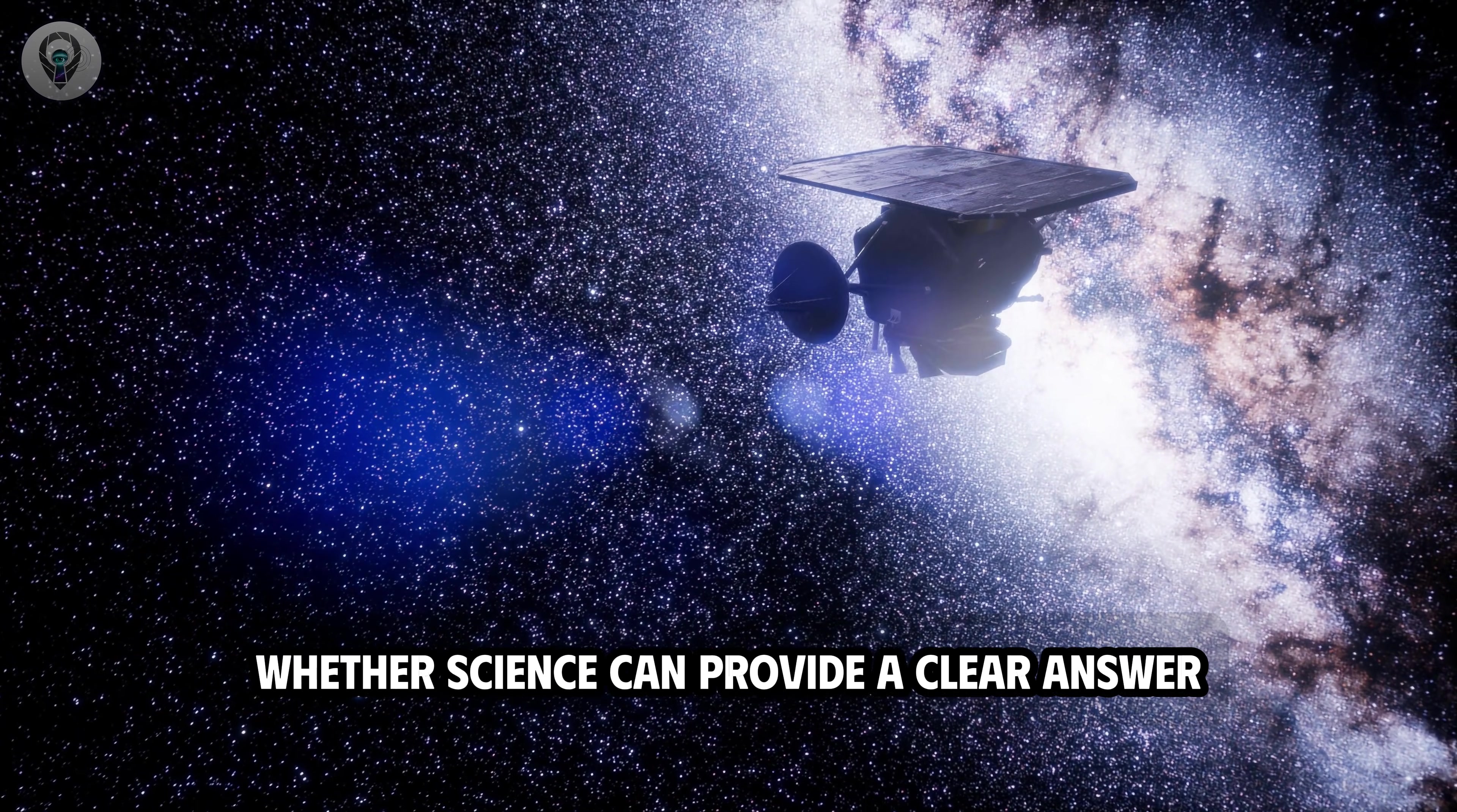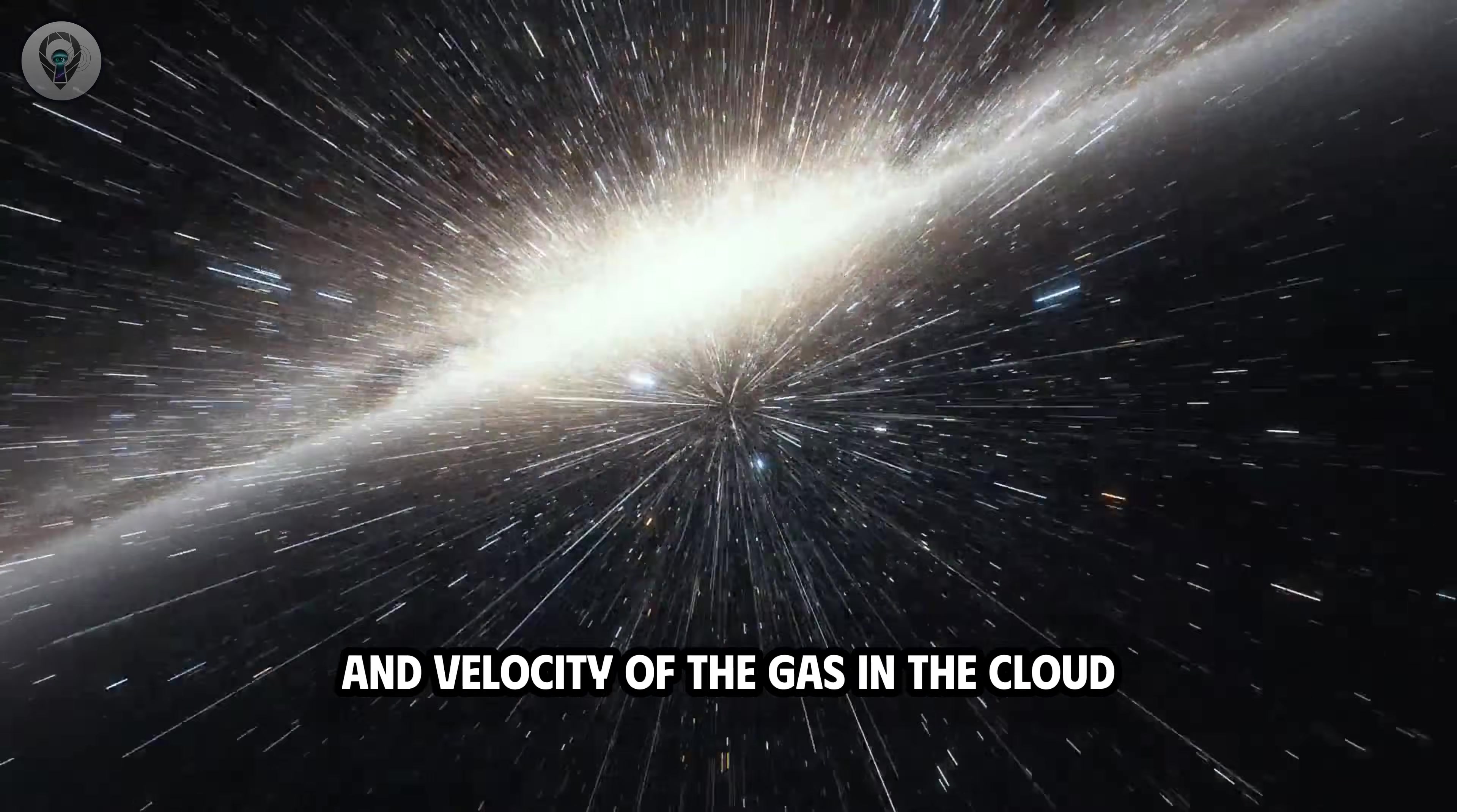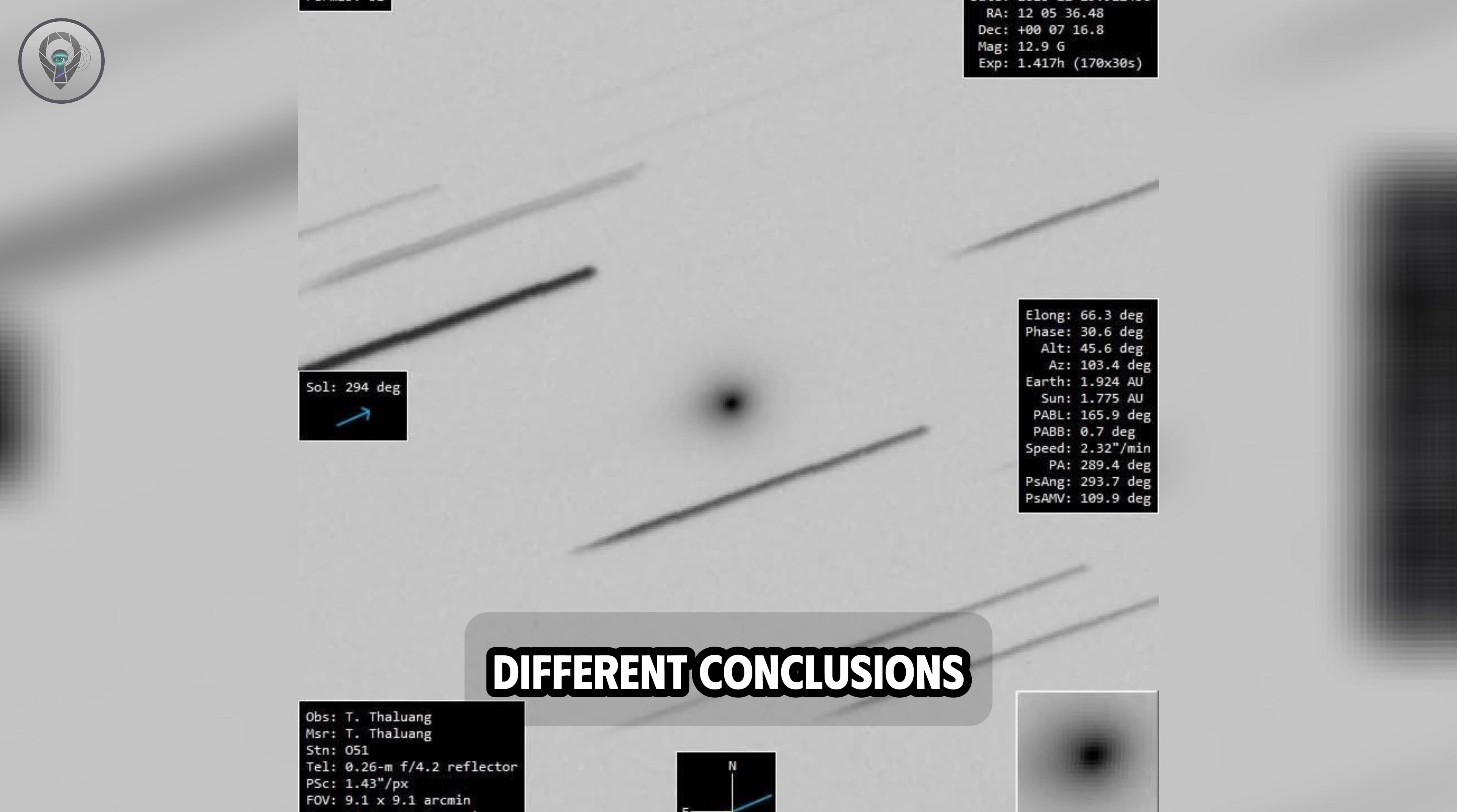The key question is whether science can provide a clear answer. According to current assessments, the images obtained are still blurry and difficult for the public to interpret, but spectroscopic measurements are considered crucial. By analyzing the chemical composition and velocity of the gas in the clouds surrounding Three-Eye Atlas, researchers can estimate the amount of mass the object has lost. If the gas plumes exhibit the characteristics of a natural comet and show significant mass loss, it is highly likely that Three-Eye Atlas is simply a rare natural object. However, there are also scenarios that could lead to entirely different conclusions.